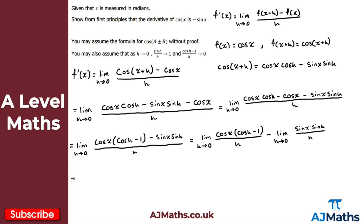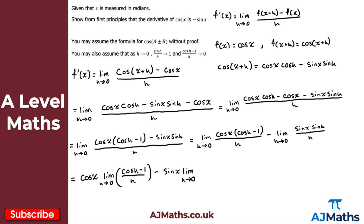Applying linearity one more time, I factor cos x out in front of the first limit and sin x out in front of the second. This gives: cos x times the limit as h tends to zero of (cos h minus one) over h, minus sin x times the limit as h tends to zero of sin h over h.